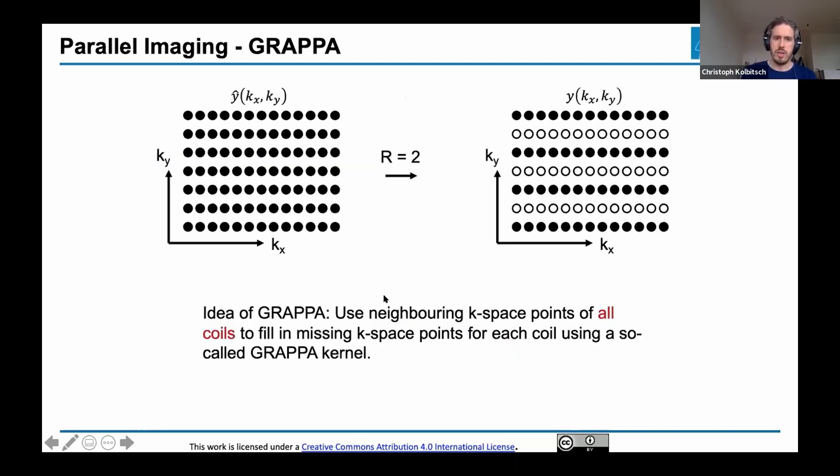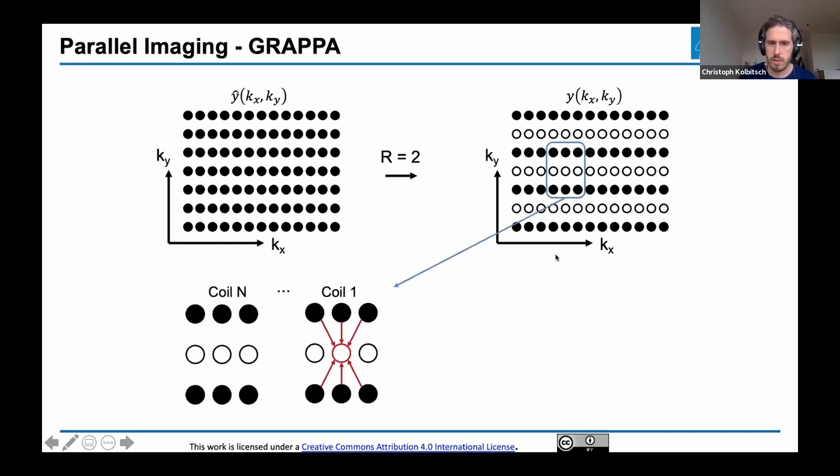This is the basic idea of GRAPPA. I don't have to acquire a full k-space. Here's an example of an undersampling factor of two, leaving out every second line. Then I use the points I've acquired to fill in the missing points. I can do this because I acquired it with multiple receiver coils, and I know the effect of these coils is that there's distribution of data from here onto neighboring k-space information.